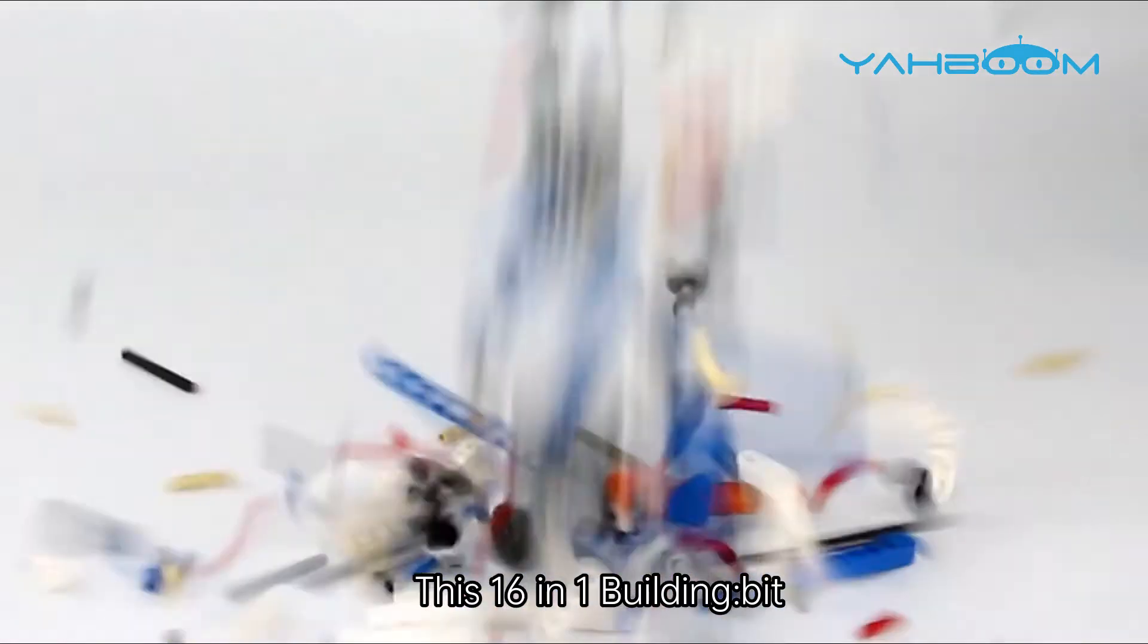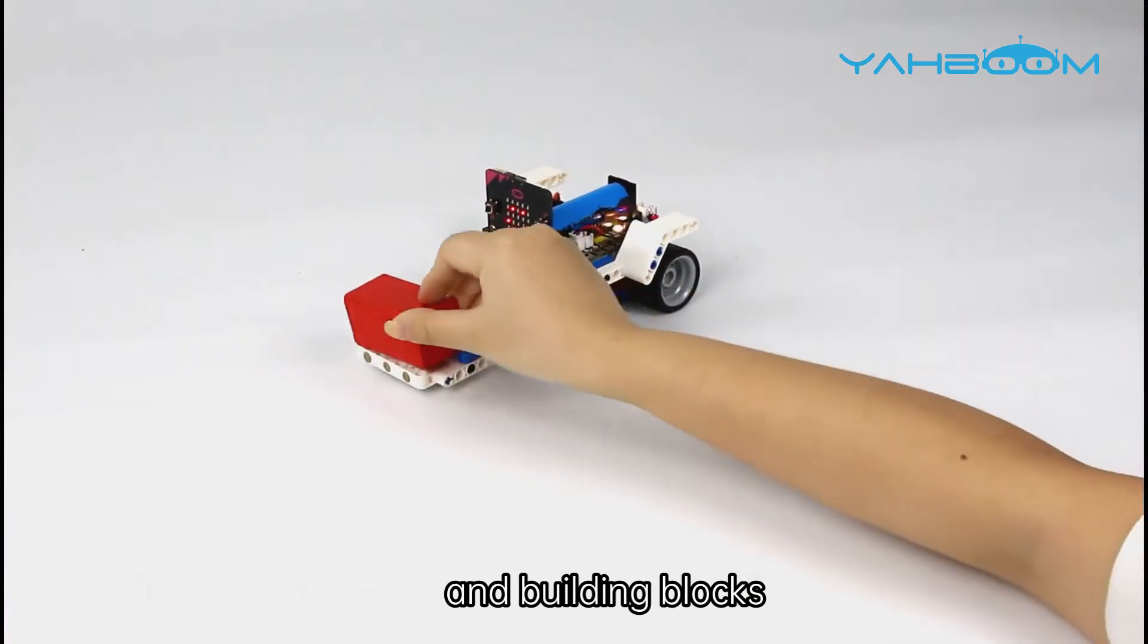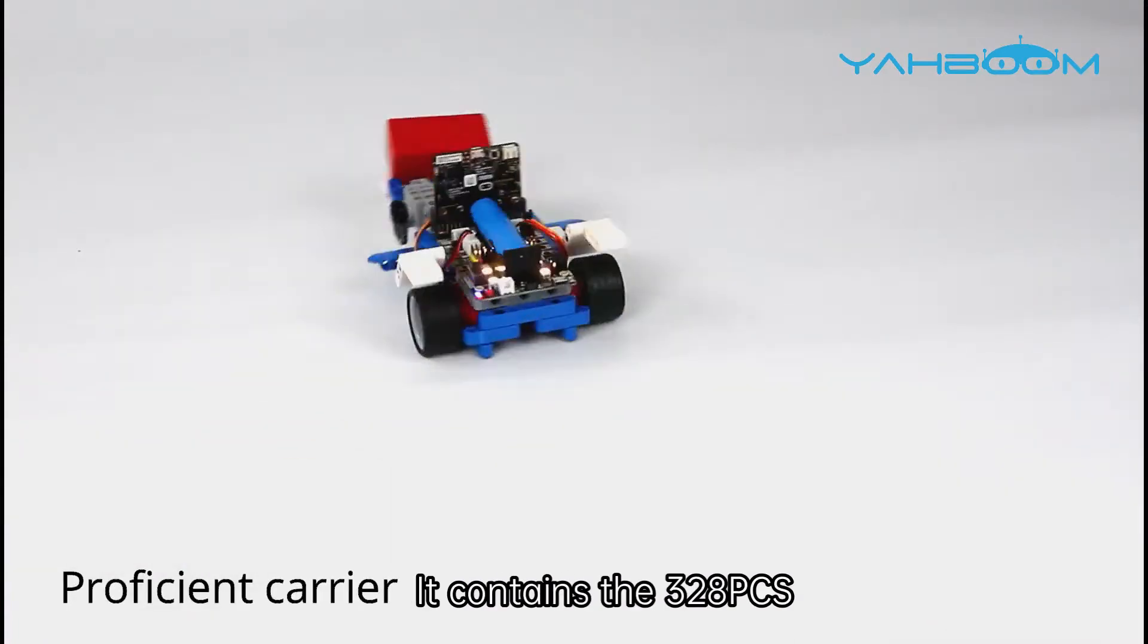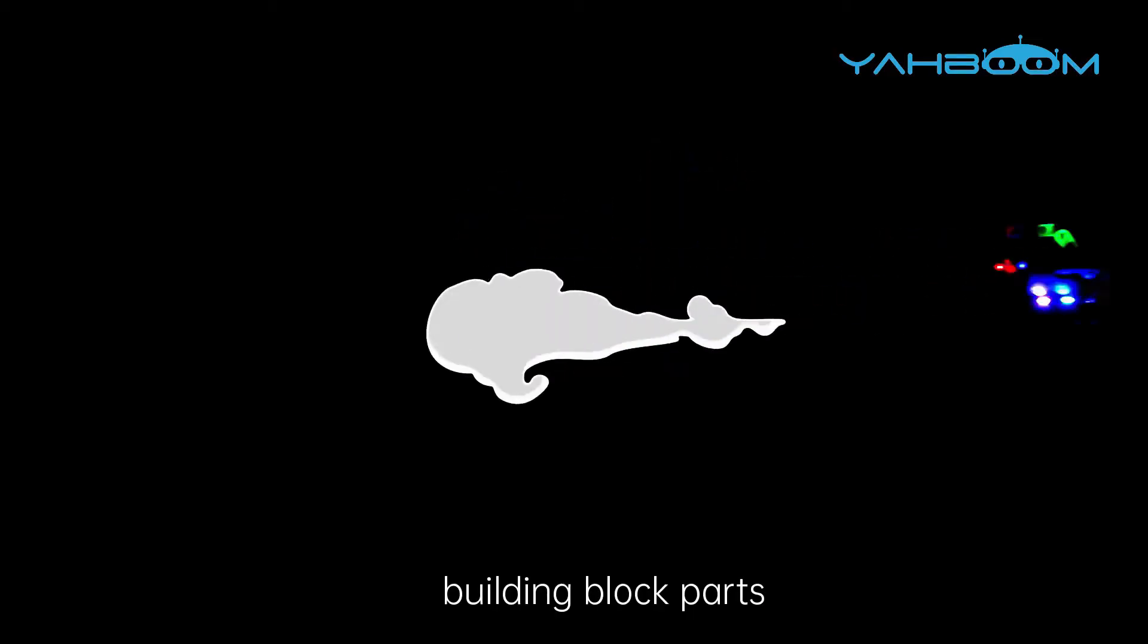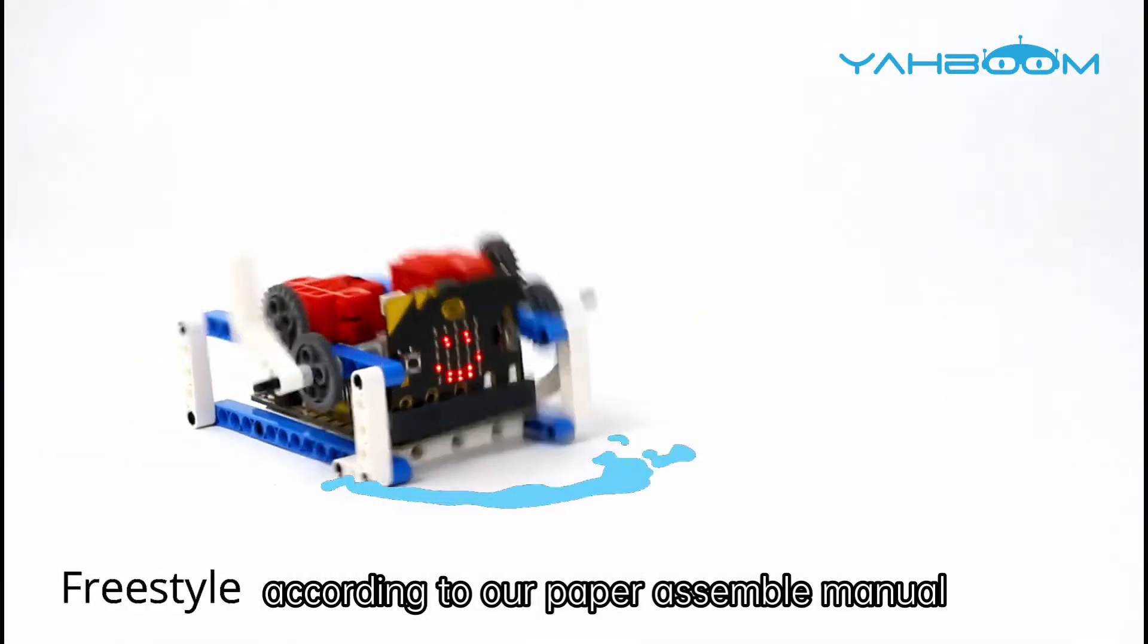This 16-in-1 building block super kit programmable kit is based on the BBC micro:bit and building blocks. It contains 3 to 8 PCS building block parts. Users can quickly create some interesting models according to our paper assembly manual.